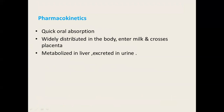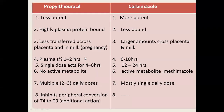These drugs are absorbed quickly and widely distributed in the body. They enter milk and can cross the placenta, potentially affecting the fetus and suckling baby. They are metabolized in the liver and excreted in the urine. Propylthiouracil is less potent but is highly plasma protein bound, and because of this it is less transferred across the placenta and into milk compared to carbamazole.